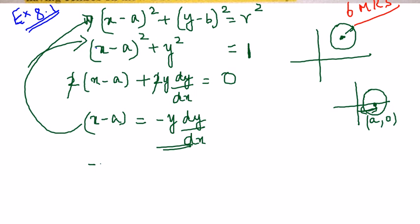I get minus y dy by dx the whole squared plus y squared equal to 1.